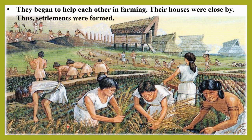They began to grow more crops. When people in that time found more work, they divided the work between themselves so that all got equal work. They began to help each other in farming. Their houses were close by. The settlements were formed. They began to farm and help each other, and slowly they formed villages.